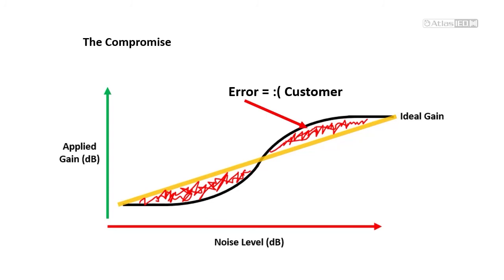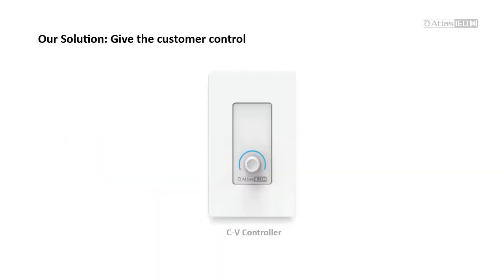This difference between the customer's expectations and ANC's response can result in customer dissatisfaction and the impression that ANC just doesn't work. It seems like there should be a better way to do this. What if ANC could just magically calibrate its own gains based on your customer's volume adjustments?